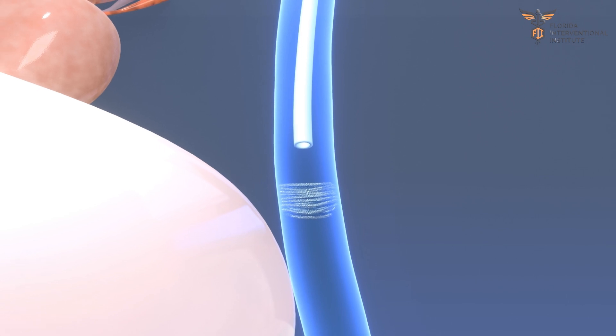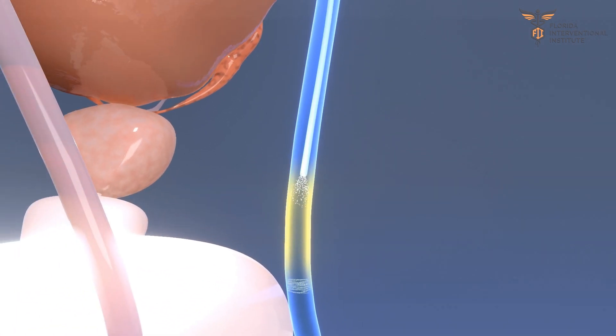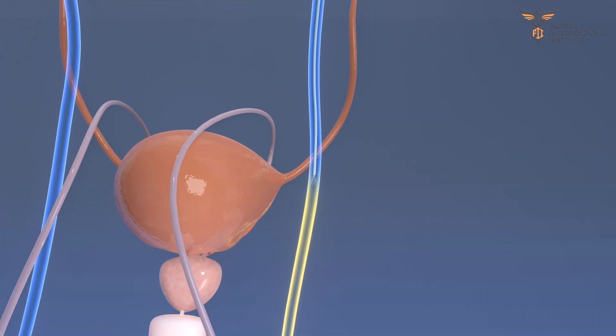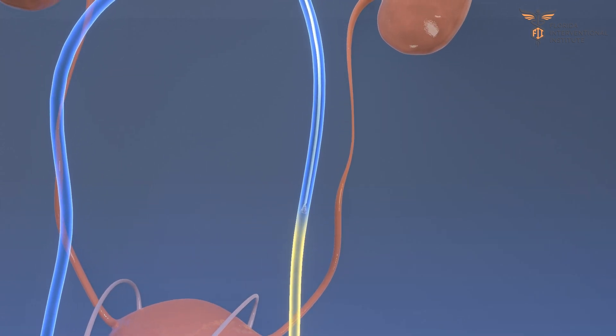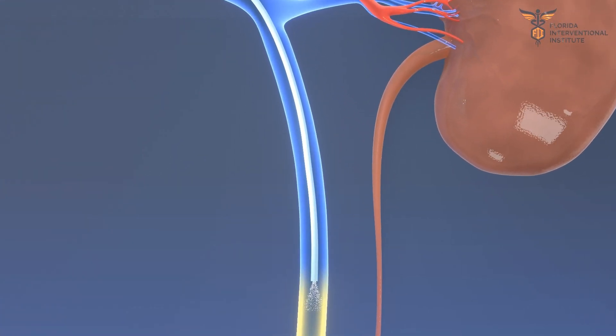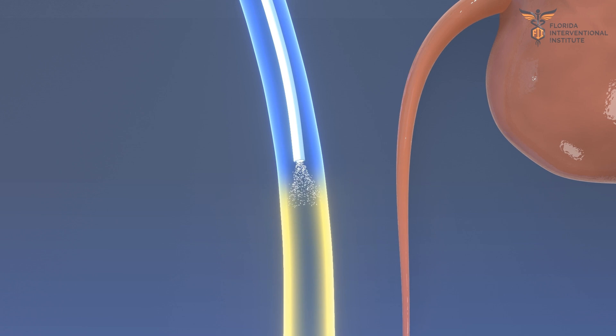Following this, a special medicine is injected into the vein as the catheter is pulled back. This medicine also helps to block the vein. Next, another coil is introduced and formed at the top of the gonadal vein.